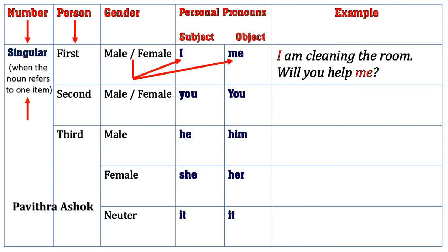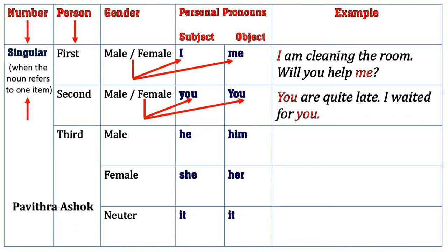Let's move on to second person personal pronoun. For male and female both, subject is you and object is also you. Please look at this example: 'You are quite late. I waited for you.' We used pronoun 'you' in both sentences. In the first sentence, 'you' is used as subject, whereas in the second sentence, 'you' is used as an object.